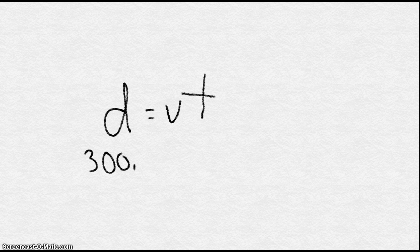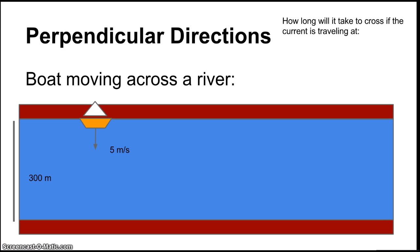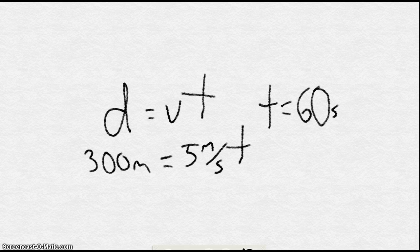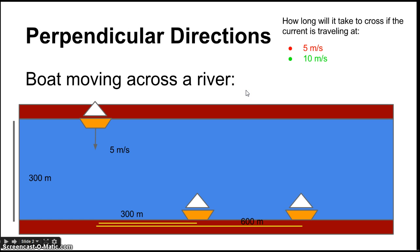Using the equation d = vt, with a distance of 300 meters and a velocity of five meters per second, time equals 60 seconds. So it takes 60 seconds for the boat to cross the river if the water is not moving. What if the water is moving perpendicular to the boat at five meters per second? It actually still takes the same 60 seconds to cross — the boat just ends up 300 meters downstream rather than directly across.